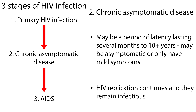Following the primary phase, there may be a period of latency lasting several months to 10 or more years. The patient may be completely asymptomatic or only have mild symptoms. However, HIV replication continues and they remain infectious.